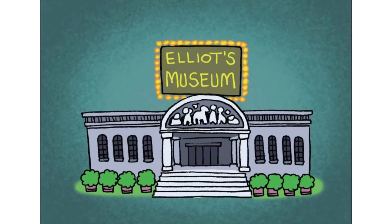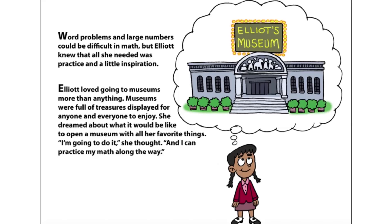Word problems and large numbers could be difficult in math, but Elliott knew that all she needed was practice and a little inspiration. Elliott loved going to museums more than anything. Museums were full of treasures displayed for anyone and everyone to enjoy. She dreamed about what it would be like to open a museum with all her favorite things. I'm going to do it, she thought, and I can practice my math along the way.